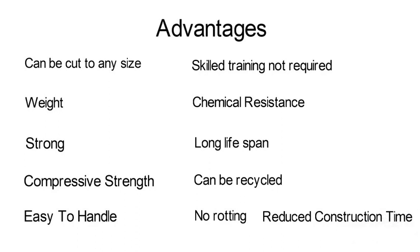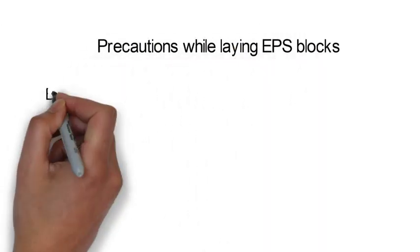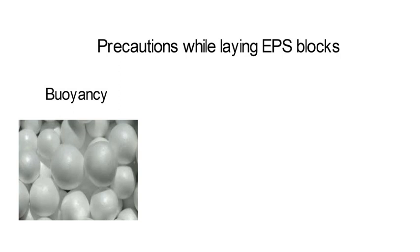Precautions while laying EPS blocks: Buoyancy. Because of its closed cell structure and light weight, EPS is buoyant. It can be minimized by installing EPS above the water table and ensuring suitable drainage. In addition, it can be counteracted by placing overlaying soils, pavements, sidewalks to sufficiently offset uplift forces resulting from buoyancy.